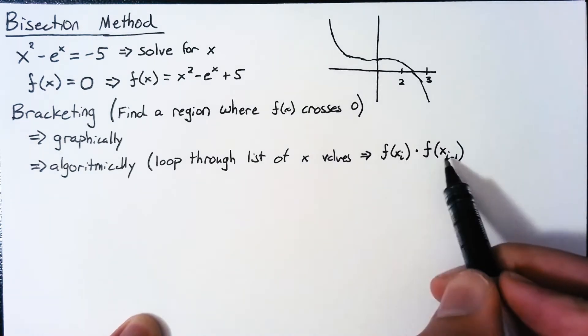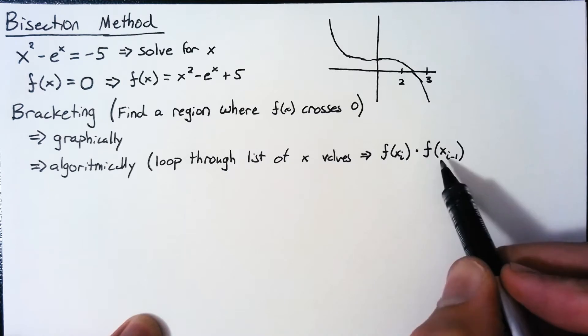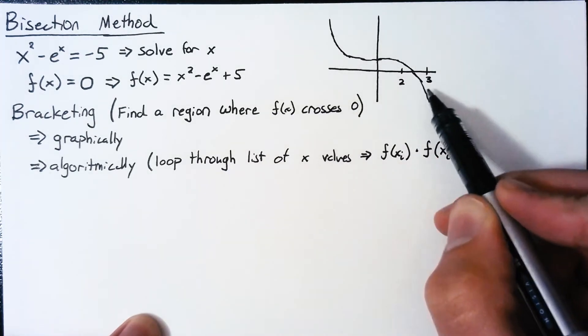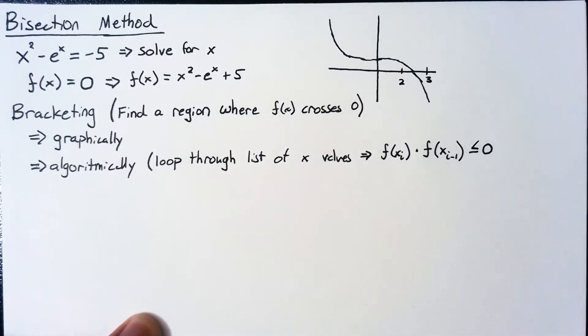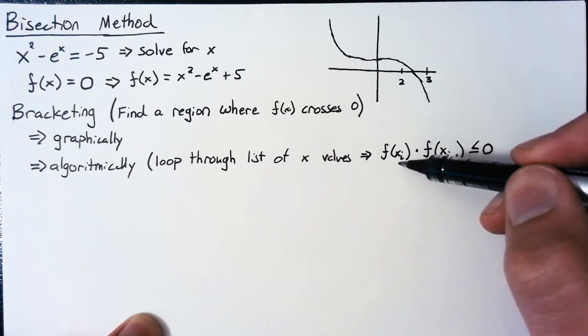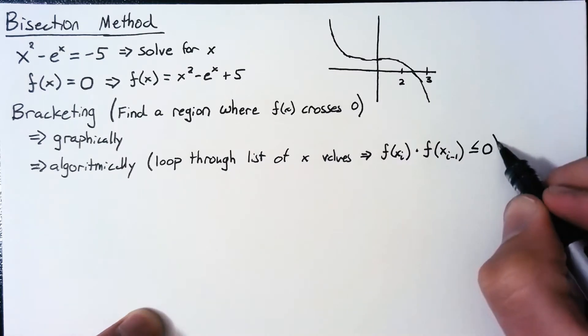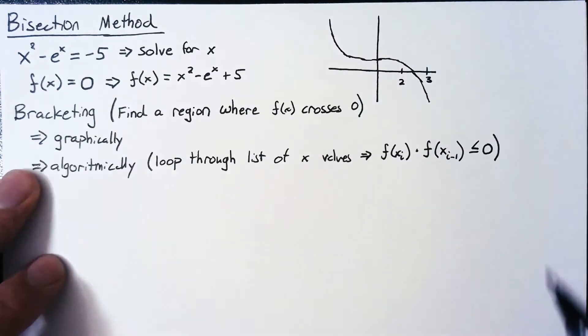And if we multiply them and they are greater than 0, if they are positive, that means that either both of these values are positive or both values are negative. If this is less than or equal to 0, then we know that we are hitting a region where one of these values is positive and the other is negative. So this is an algorithm that we can do that we can avoid this manual process of graphing the plot.